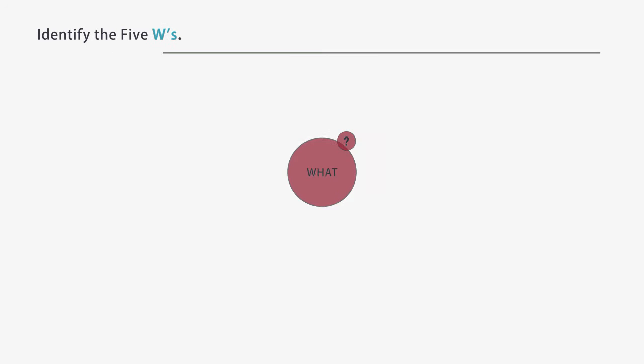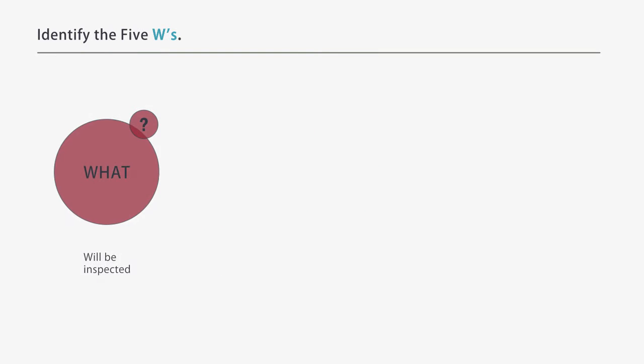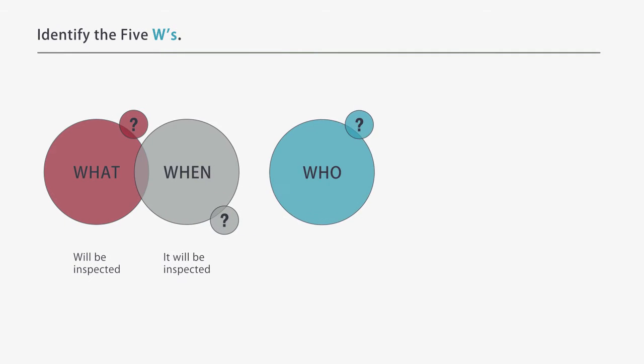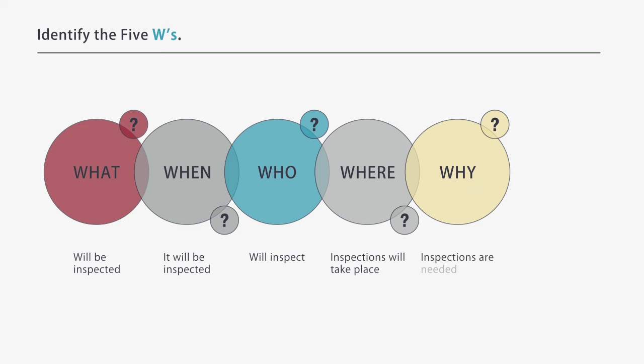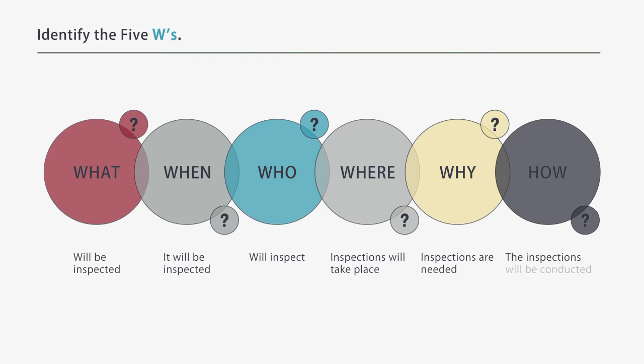Who, what, where, when, and why, and should also contain the how. With regard to a QASP, those five Ws are translated to what will be inspected, when it will be inspected, who will inspect, where inspections will take place, why inspections are needed, and how the inspections will be conducted. The why is answered by identifying risk level, and the how is answered by determining the method of surveillance.